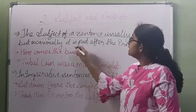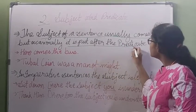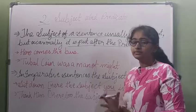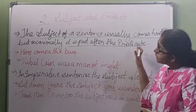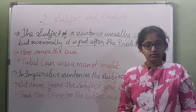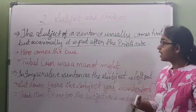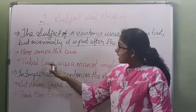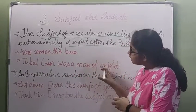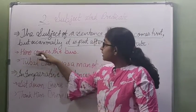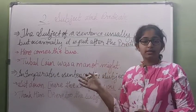The first one is, the subject of a sentence usually comes first. Usually when we form a sentence, the subject comes first and predicate comes later. But occasionally, it is put after the predicate. For example, here comes the bus.